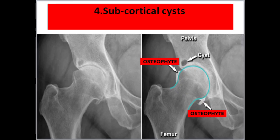Four: subcortical cysts. Although subcortical bone cysts are a characteristic finding of osteoarthritis, they are only visible in approximately one third of X-rays of osteoarthritic joints. This hip joint is narrowed and large osteophytes have formed. Note these cysts may be called subchondral cysts, subcortical cysts, or geodes — any of these terms are acceptable.